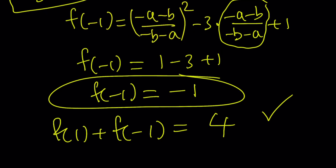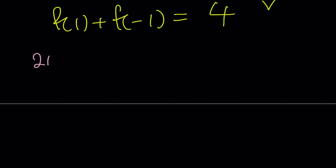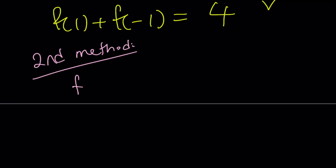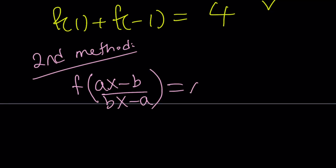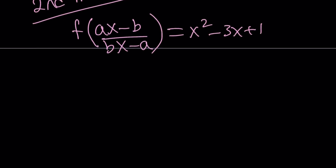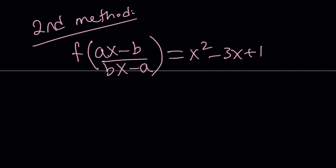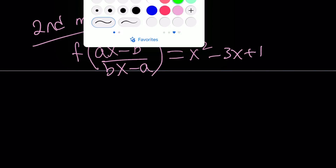We're going to do the second method now. These two methods are commonly used with functions, and obviously the second method is shorter. We have this equality and we're supposed to find f of 1. Instead of trying to solve for f of something like a single variable, why don't we just try to set what is inside the parentheses equal to 1, so we can directly do this.